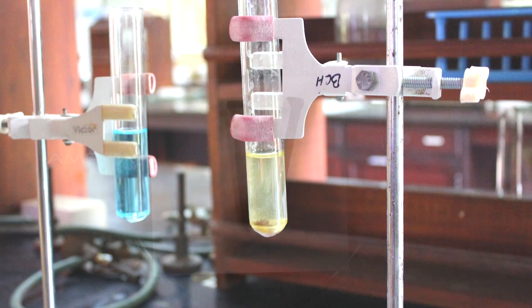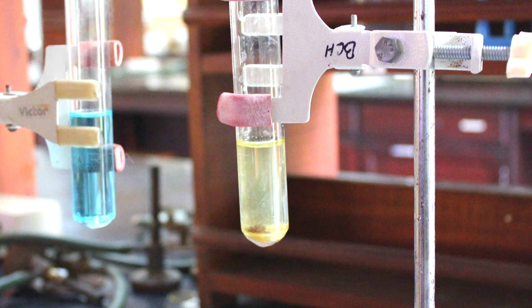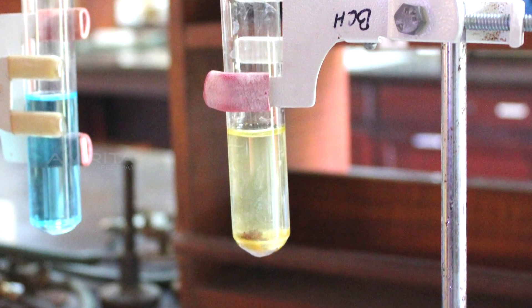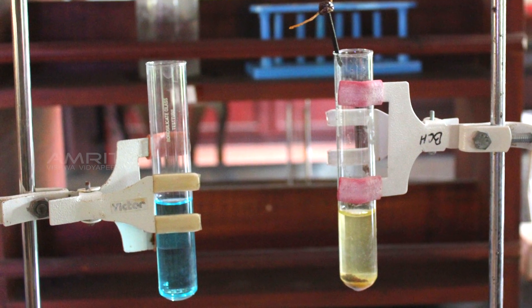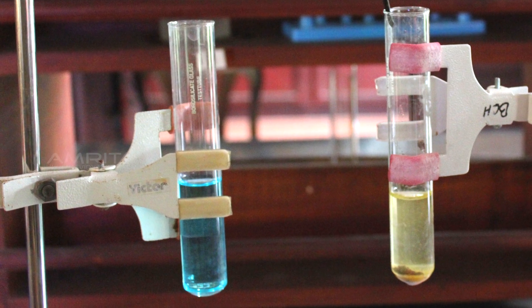The colour of the copper sulphate solution in which the iron nail was dipped changes from blue to green, whereas the colour of copper sulphate solution in the other boiling tube remains the same.